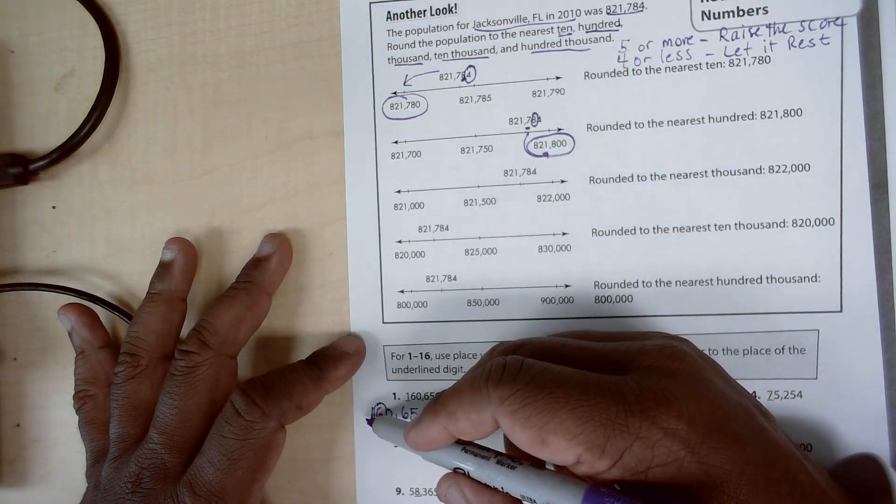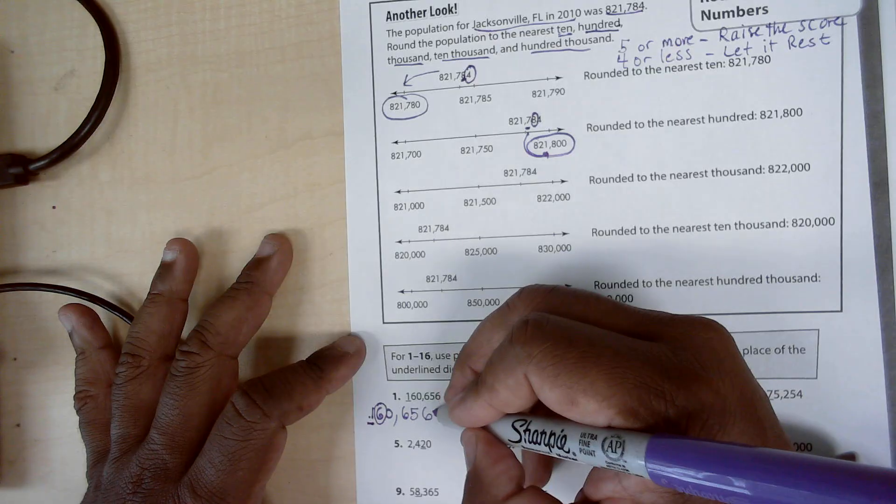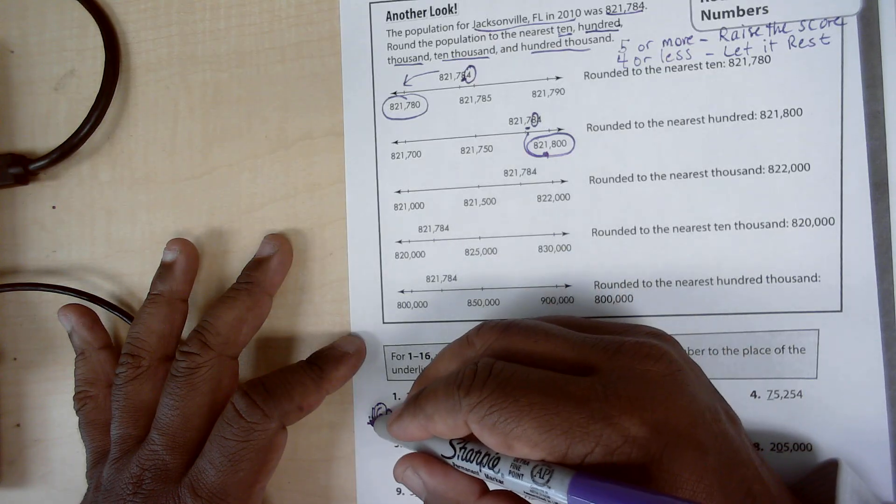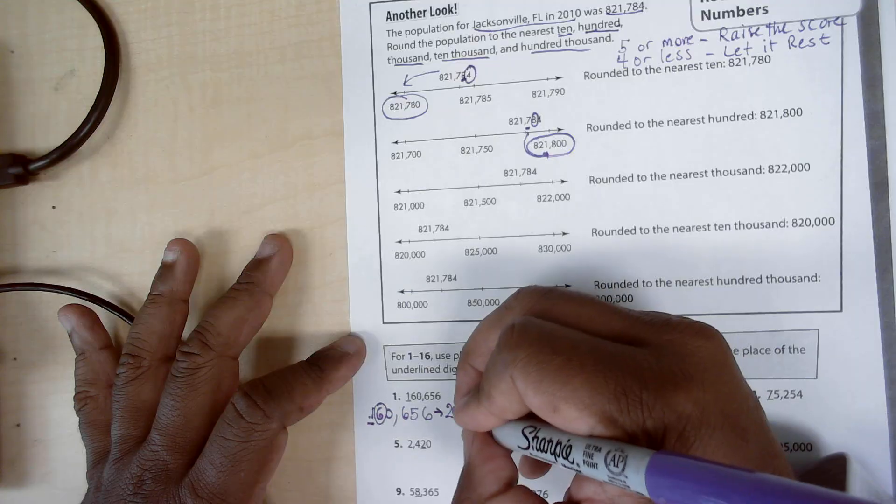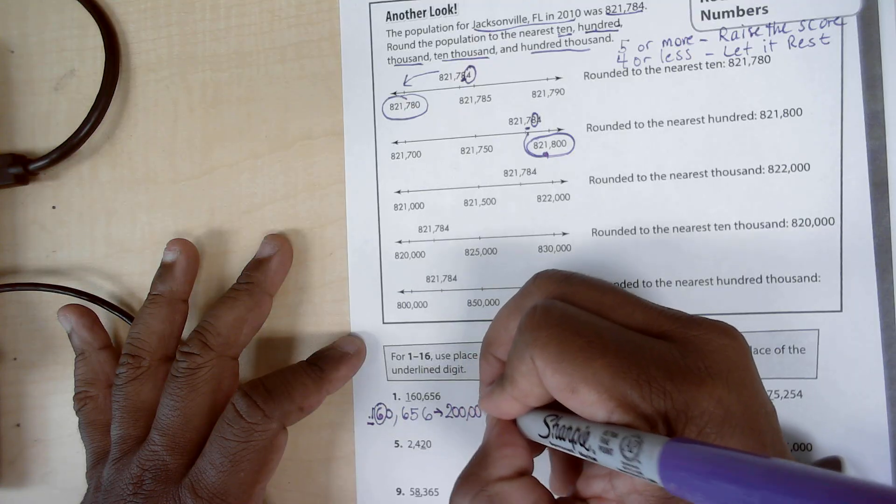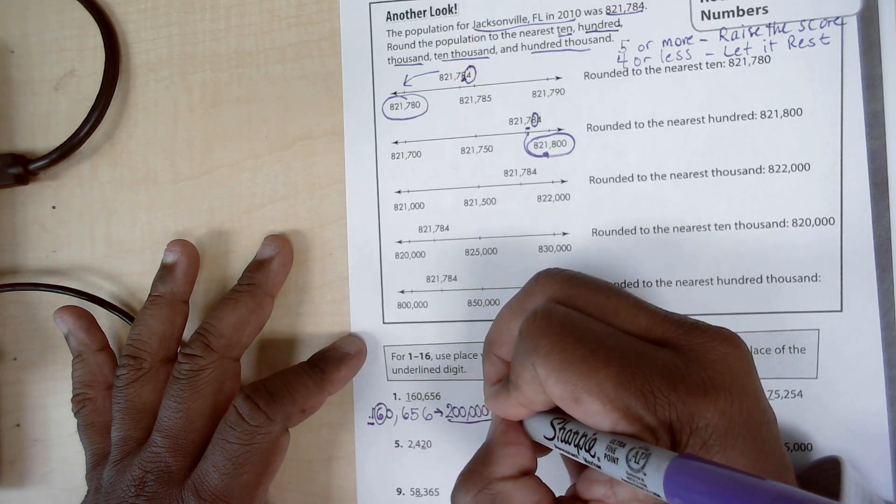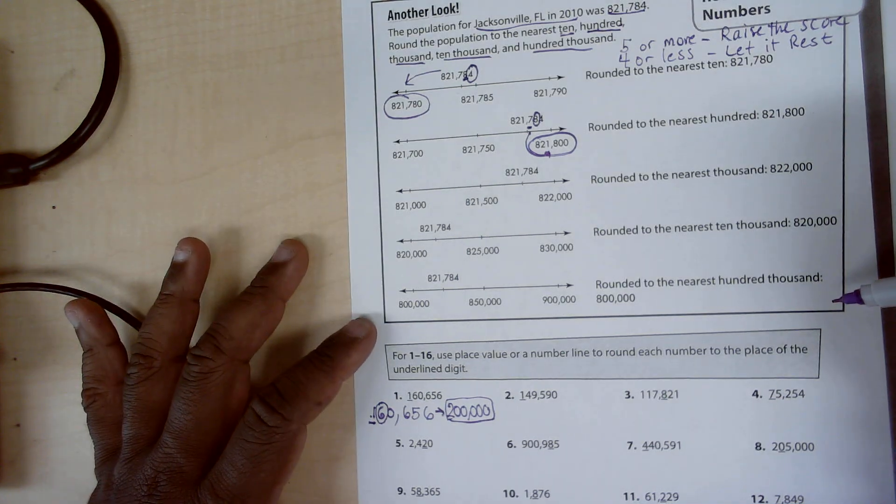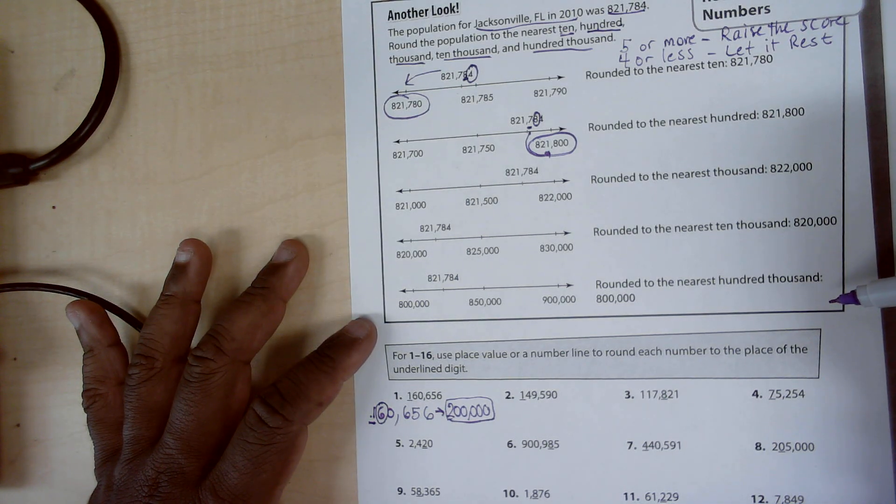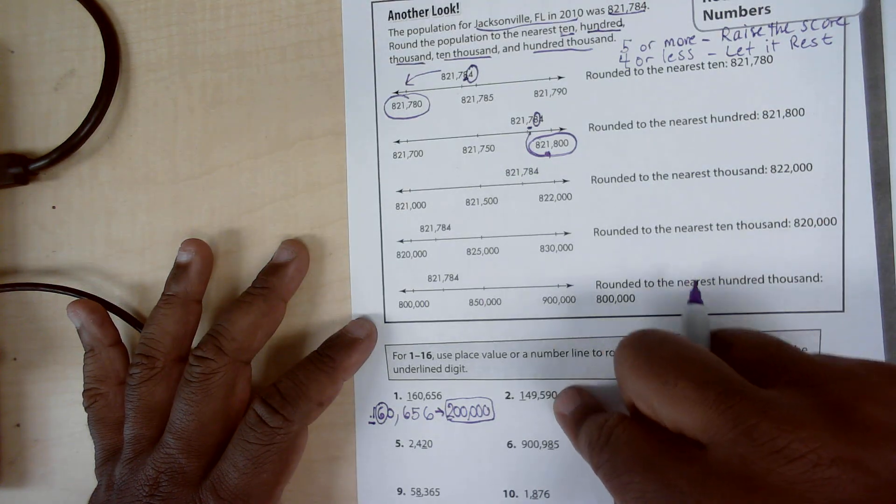So this rounds to two, and then all the other digits after it are zero. So it rounds to two hundred thousand, and that's the answer for number one. All right, you try number two on your own.